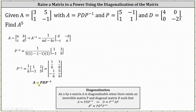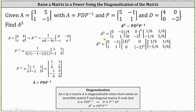Now we know matrix A equals P times D times P inverse, and therefore we can determine matrix A raised to the fifth power by computing P times D raised to the fifth power times P inverse. Here we have matrix P, the fifth power of the diagonal matrix D, and then times the inverse of matrix P. Because D is a diagonal matrix, we find D to the fifth by raising each entry along the main diagonal to the fifth power.